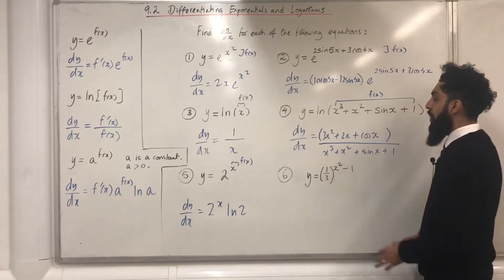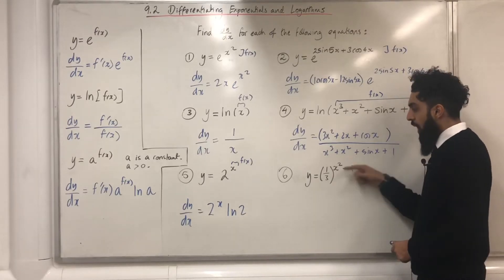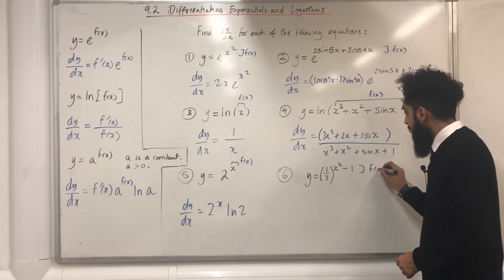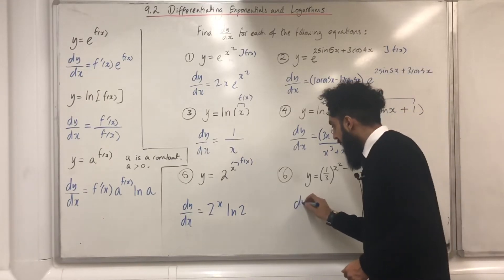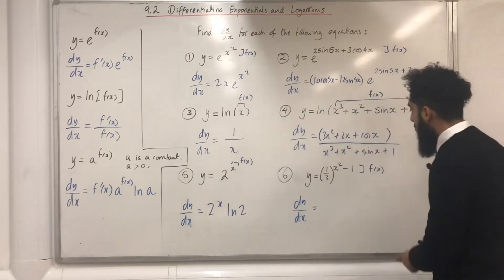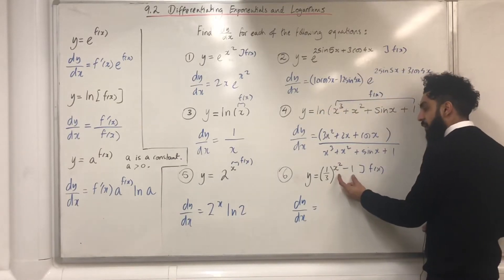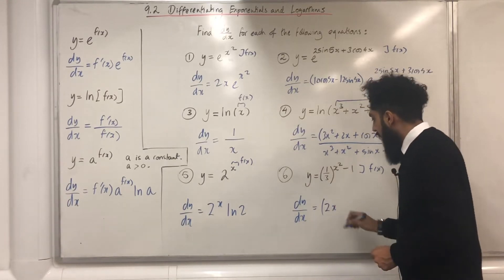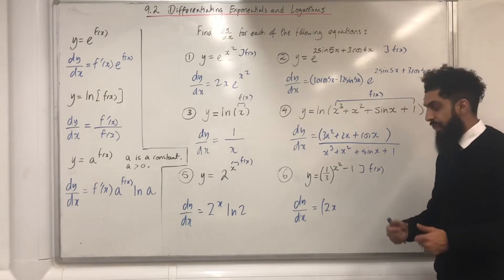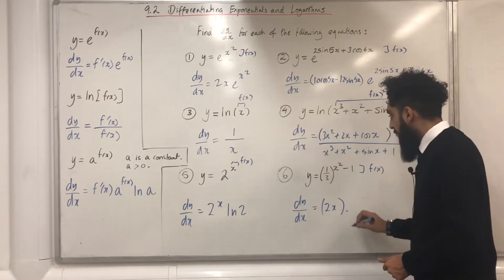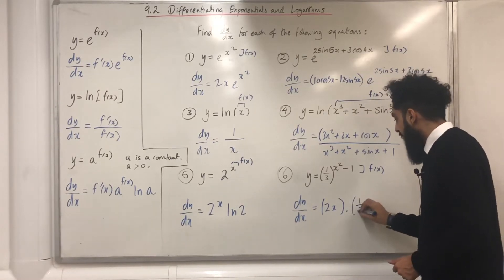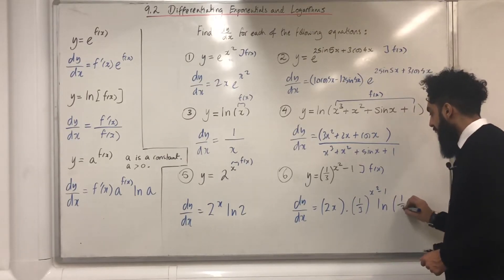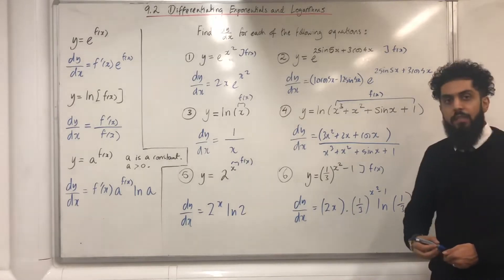Question 6: y equal (1/3) to the power (x² − 1). The x² − 1 is my f(x). dy/dx is equal to — I differentiate x² − 1 and obtain 2x (differentiating −1 is just 0) — so 2x multiplied by (1/3) to the power (x² − 1) ln(1/3). That is my dy/dx.